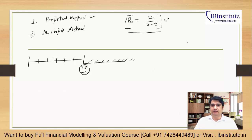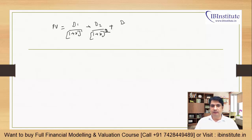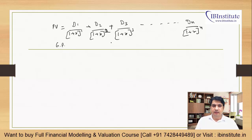Let's discuss this formula with respect to DCF. DCF says that any company's value depends on the present value of its future cash flows. So we calculate: D1/(1+R)^1 + D2/(1+R)^2 + D3/(1+R)^3 and so on, up to Dn/(1+R)^n. This is a geometric progression equation, and when we solve it through a complex process, the simplified version that comes out is: P0 = D1 upon (R minus G).